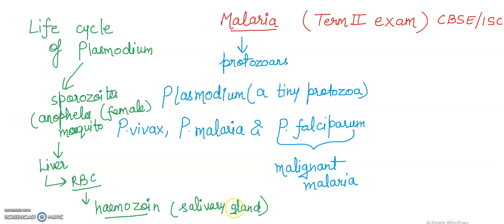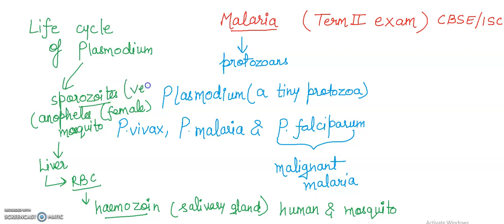When the mosquito bites a human, these sporozoites are introduced into the body, initiating the infection cycle. It is interesting to note that the malaria parasite requires two hosts to complete its life cycle: one is the human and the second is the mosquito. The female Anopheles mosquito is the vector — meaning it is the agent that transmits the disease.